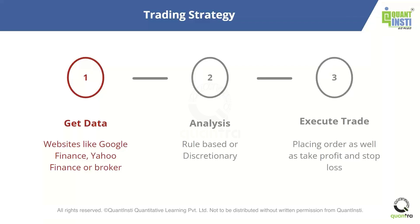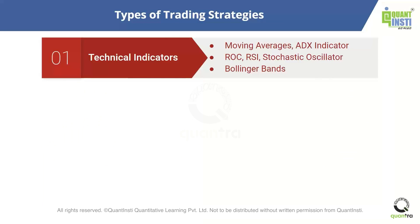I've tried to put them into four buckets. First, we have trading strategies dependent on technical indicators. You can have technical indicators like moving averages or the ADX indicator, which give you a value. Or ROC (rate of change), RSI, or stochastic oscillator, which give you a value within a certain range and tell you when the stock is oversold or overbought. You also have Bollinger Bands, which use statistical properties like standard deviation and will help when creating more advanced strategies.